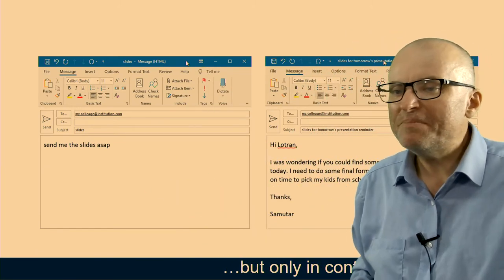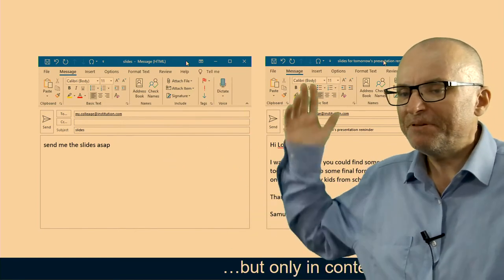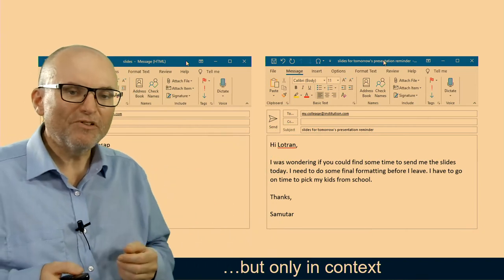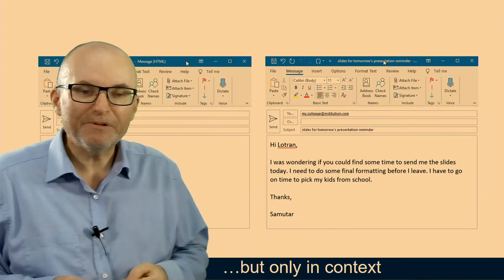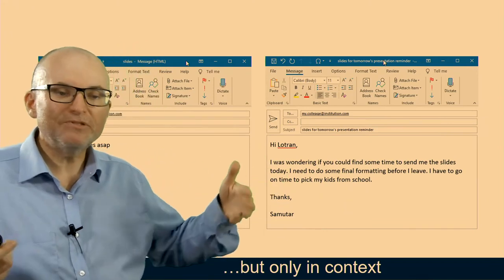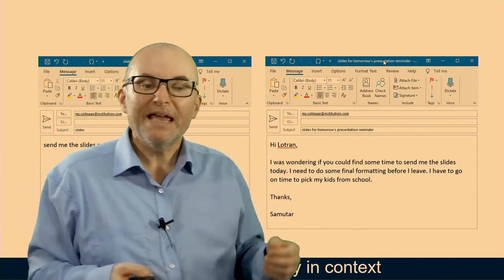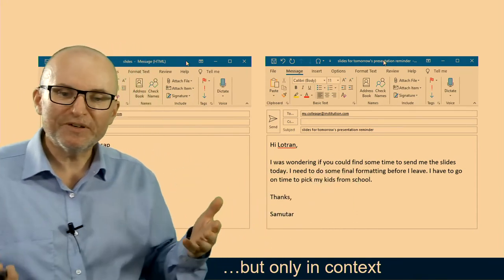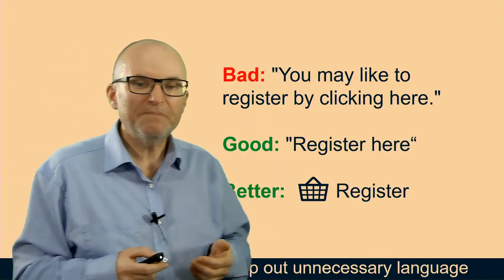Now of course you can take that too far. In the context of writing an email, sending something like 'Send me the slides ASAP' is probably not only impolite but not very helpful. You should probably include more information. But there's the other extreme where you go to this flowery indirect language, which is how English expresses politeness: 'I was wondering if you could find some time to send me the slides. I need to do some final formatting before I leave.' But actually, in this sentence, perhaps the politeness is too much, but it's good to give some context. We need to find a balance between the two.